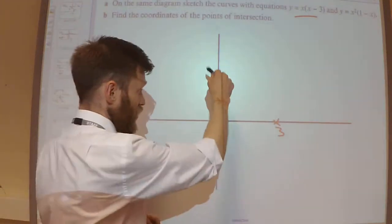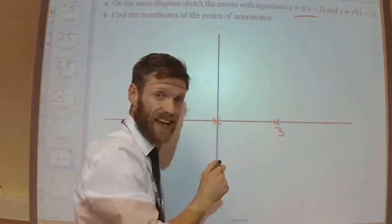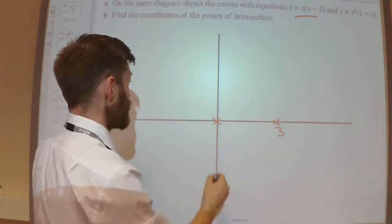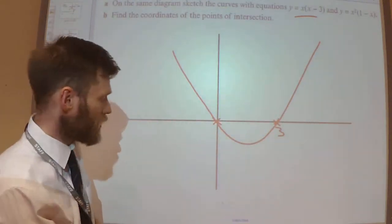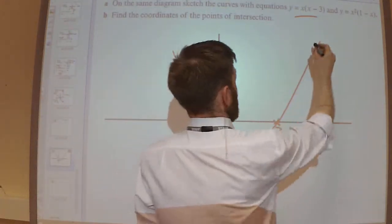I know it's going to be a U shape because if I was to expand this out, I'd get a positive x². So that's going to look something like this. Let's just label that up.